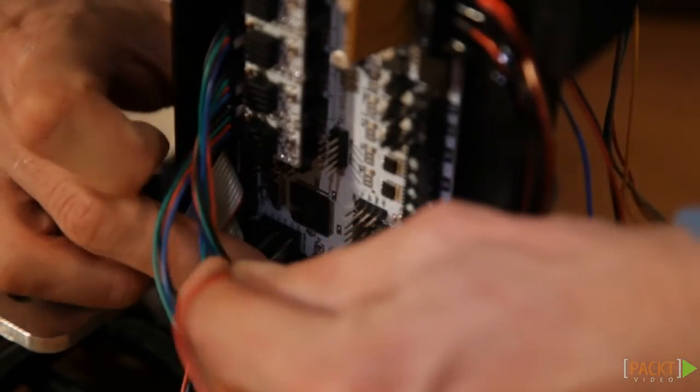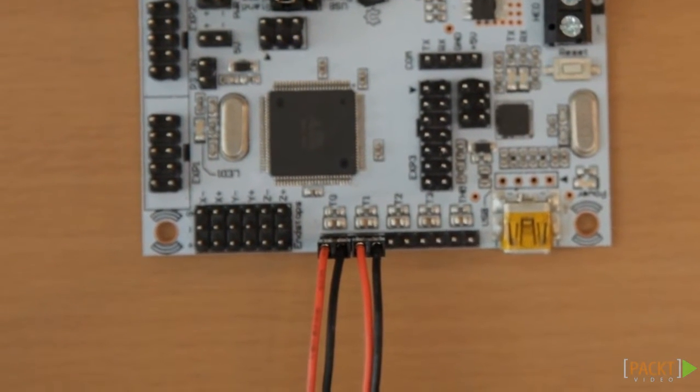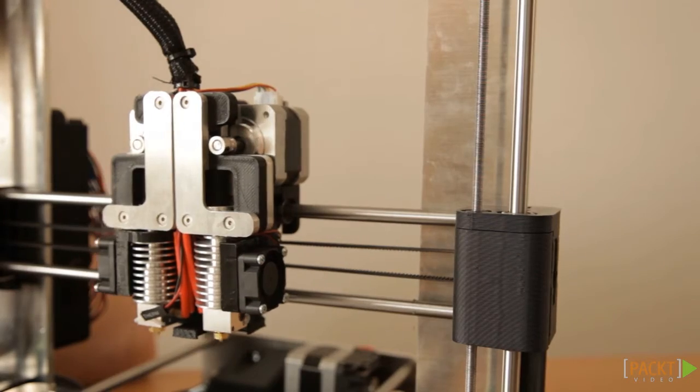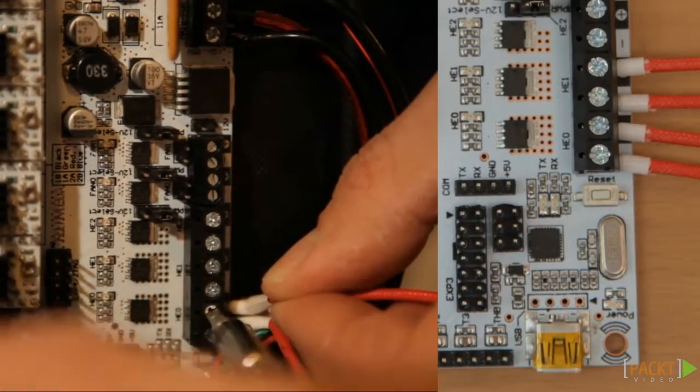First, connect the thermistor to the T0 and T1. To refresh your memory, the left extruder is numbered 0, the right one is numbered 1. Connect the heaters to HE0 and HE1.